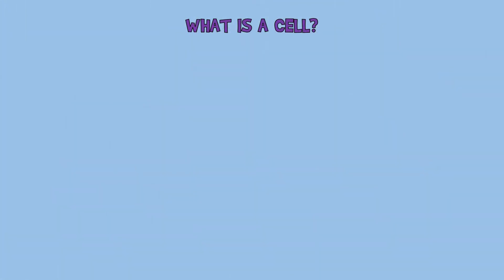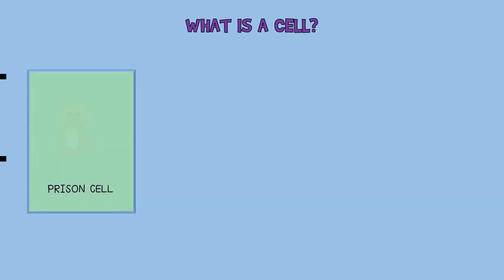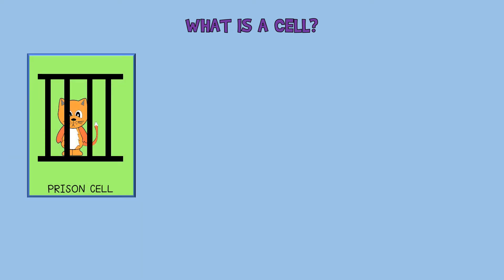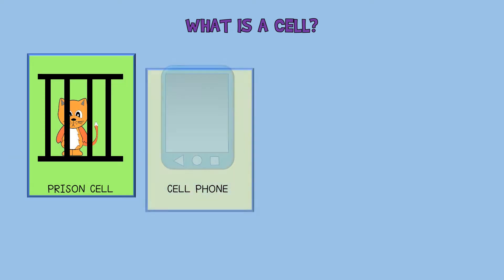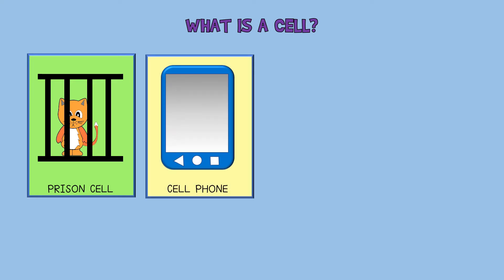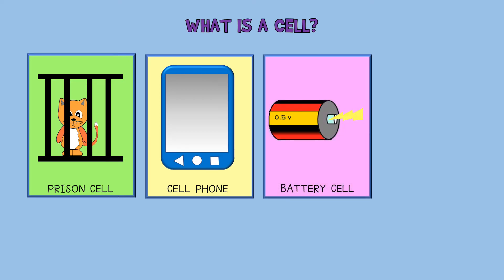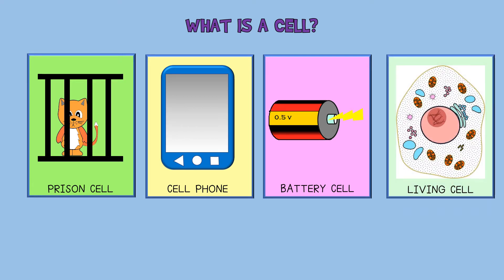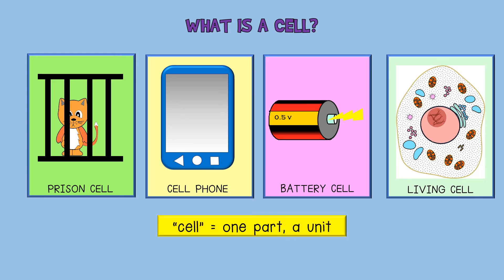Let's get the words right. There are different meanings to the word cell. A cell could be a prison cell. We talk of a cell phone — it is called a cell phone because cell phone waves work when the phone moves from one area to another. In natural sciences, you have learnt that a battery is made of units called cells. In biology, cells refer to the small parts that work together in a living organism. The word cell refers to anything that is one unit or one part of something.